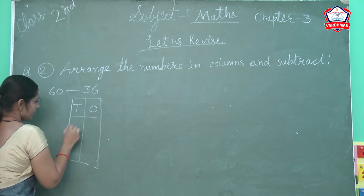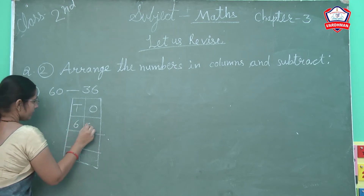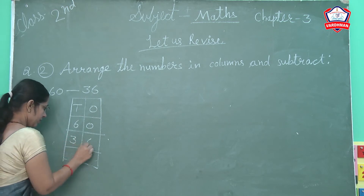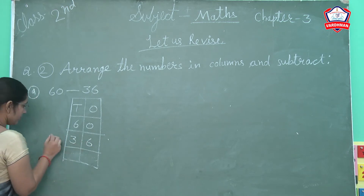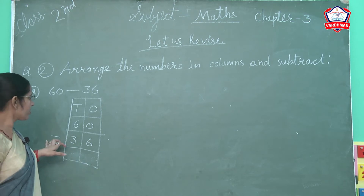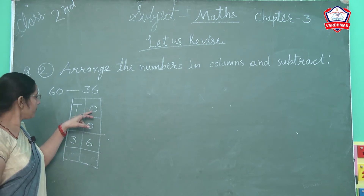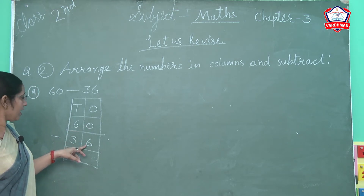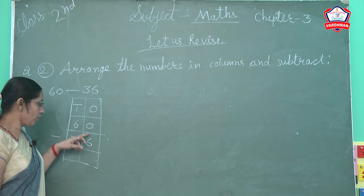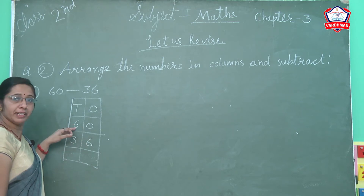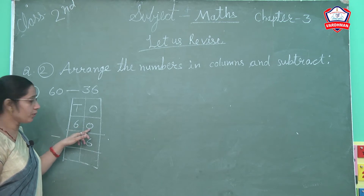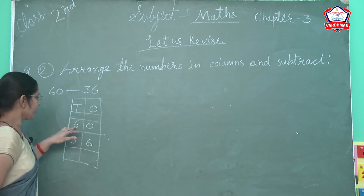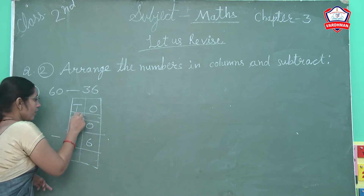Tens and ones. First number is 60, next down is 36. Subtract. Write the symbol here. Now start the ones column. In the ones column, the first digit is 0. We have to subtract 6 from 0. Kya 0 mein se 6 less hota hai? No. Toh kya karenge? Pass wale digit se borrow lenge. 6 se 1 borrow liya to kya banega? 6 se 1 borrow lete hain yahaan pe.